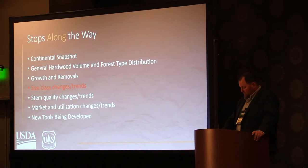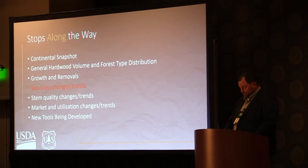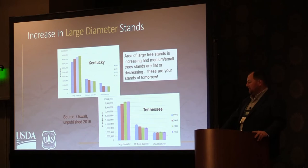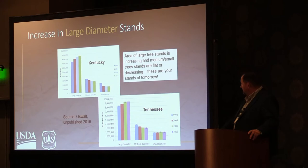Here's a similar look for the top four pine species with the same parameters — growth, removals, mortality, and net change. Longleaf is still visible on the scale, but when you add shortleaf and then loblolly, it goes way off the top of the chart. Moving on to size class and trends, looking at two states as an example: the area of large trees is increasing, while medium and small trees are flat to decreasing — and those smaller trees are your stands of tomorrow.